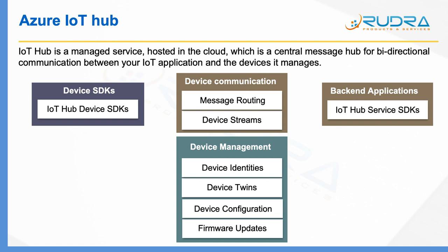The next area is device management. In this area, there are a lot of capabilities in IoT Hub. One is device identities, which is basically the identity registry. The second one is device streams. Third one is device configuration, and the fourth one is firmware updates. There are other capabilities also, but these are the most important ones. In this lecture, I'm going to take you through the device management area in a bit more detail, and in the subsequent lectures, I'm going to take you through device communication in a lot more detail.